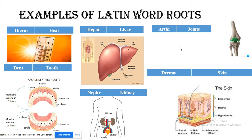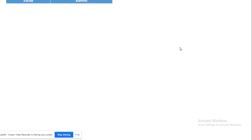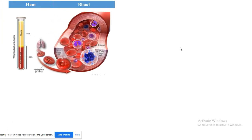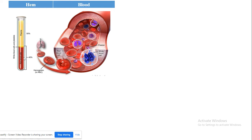Arthritis is an example using the word root 'arthr'. We also have 'hemo' or 'hem', which means blood. For example, hemoglobin is a blood-related term derived from 'hemo'.